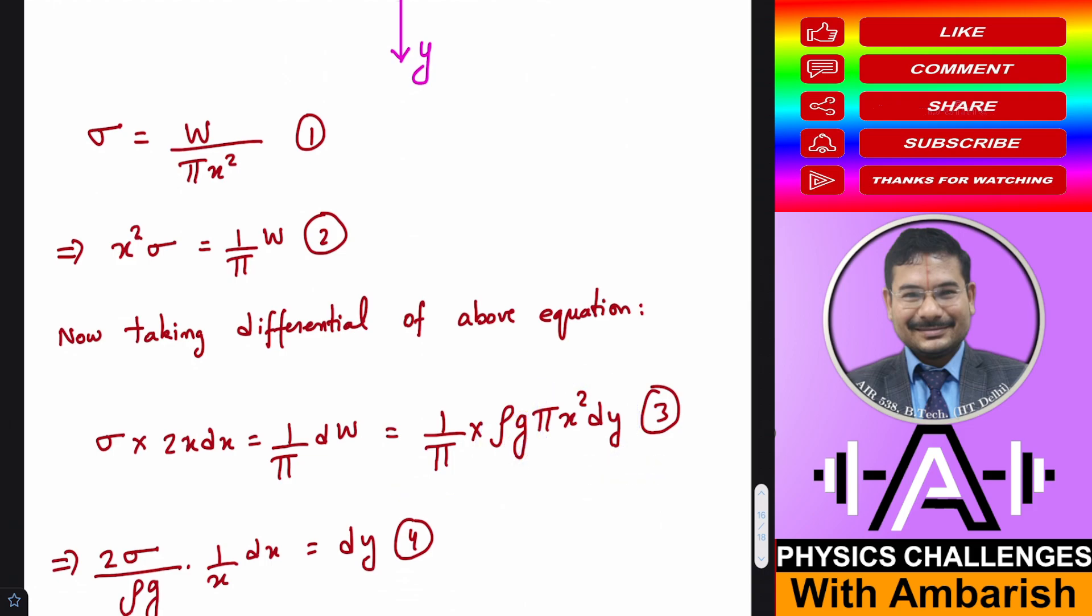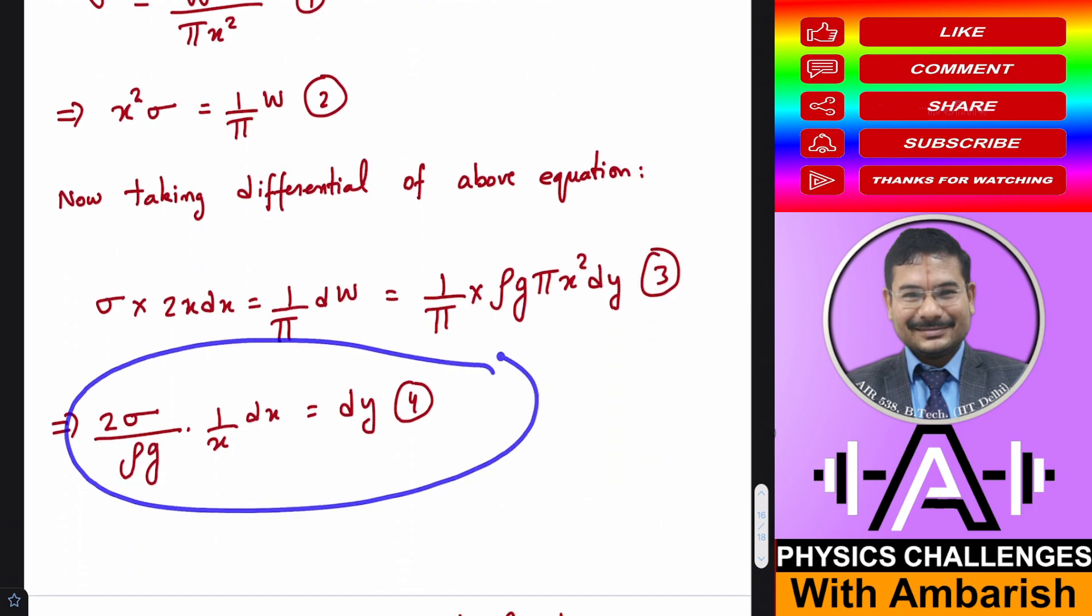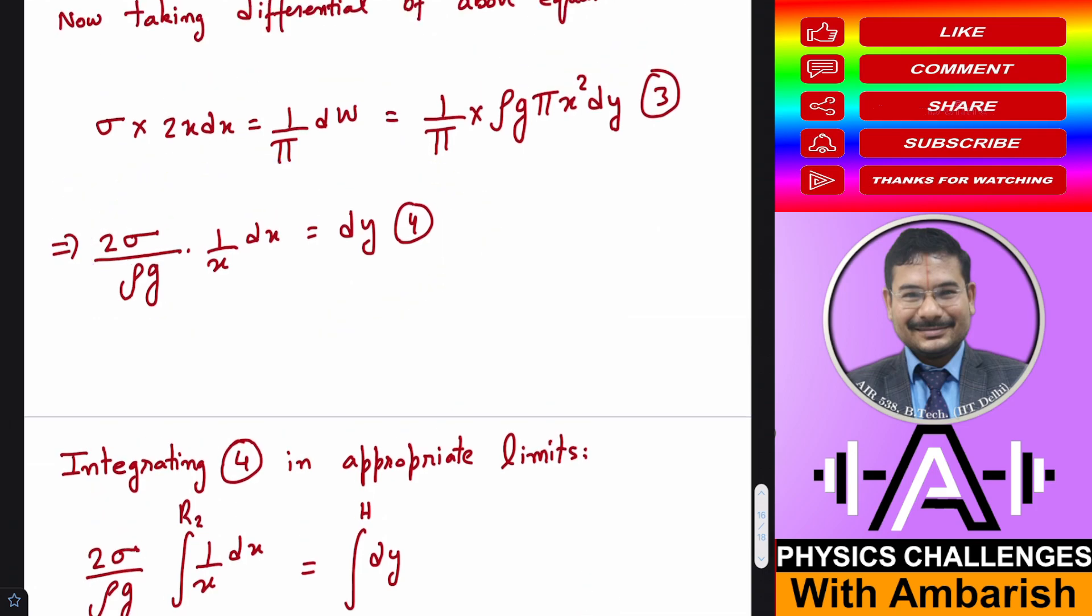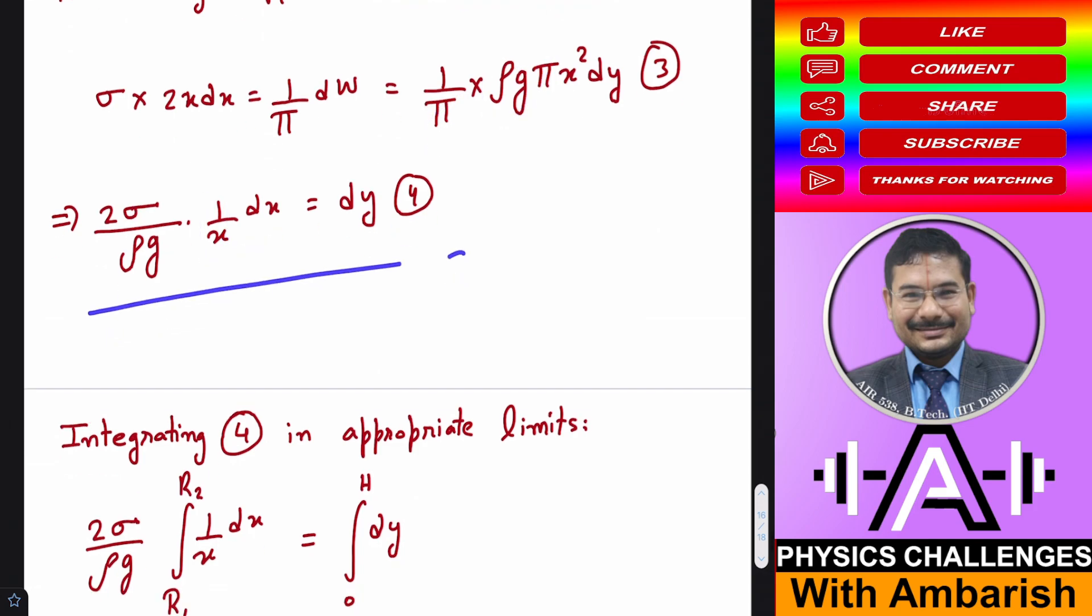Now it's a simple differential equation. You separate the elements and now we can integrate to get the profile of the curve. So now we can integrate this equation. You can see this x² you take here. So you'll have 1/x dx type of things and this π will cancel off with π. So integrate this now.